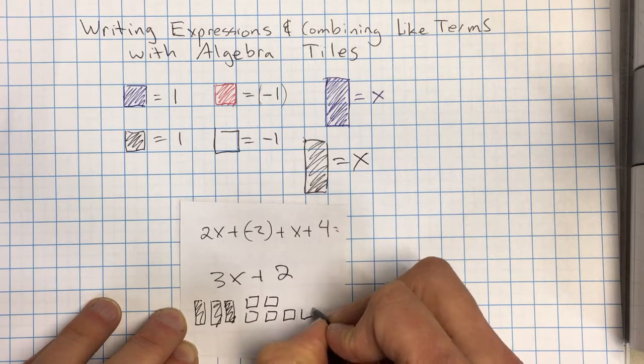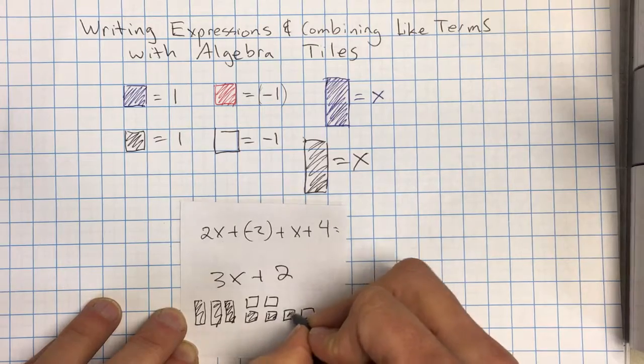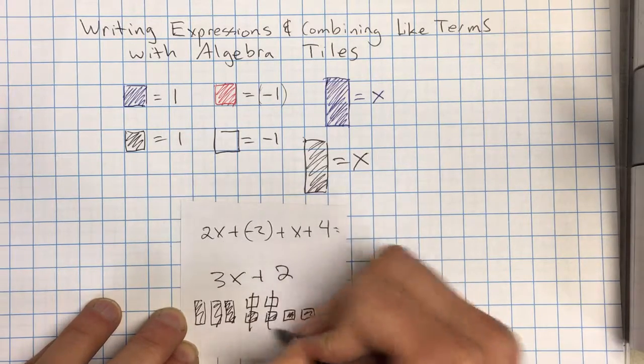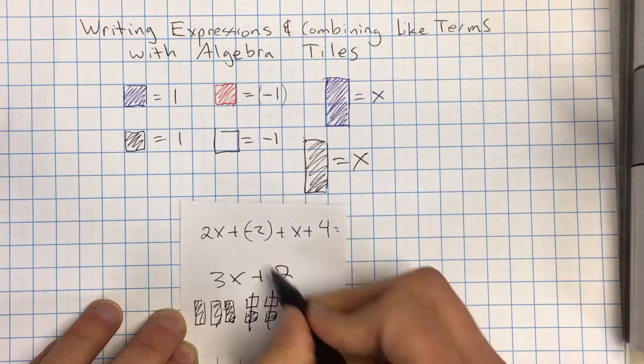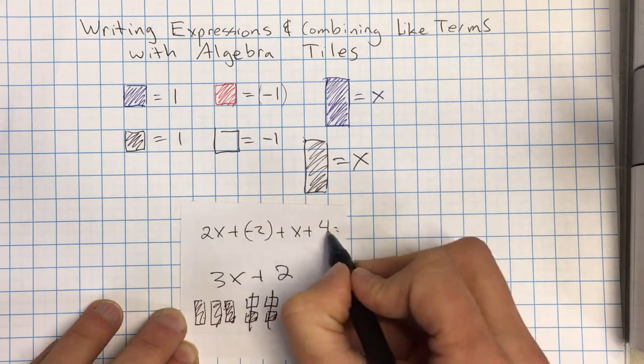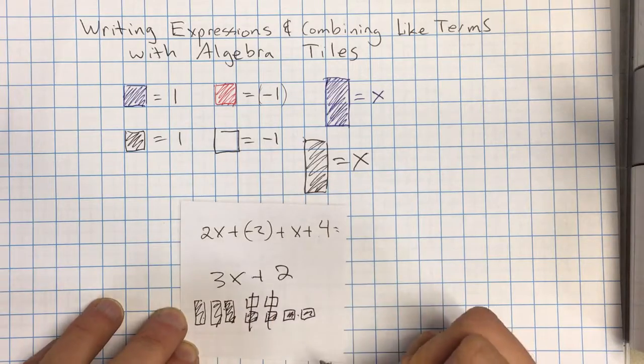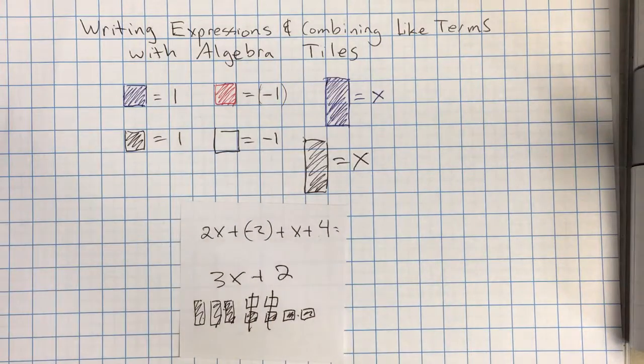And all of these are shaded in. Again, I see some pairs. So I can cross out that pair and that pair. Which tells us that we have 3x plus 2 is what the simplified version of this longer expression is. So this is just how we use algebra tiles to write expressions.